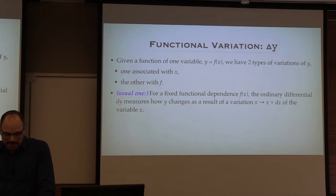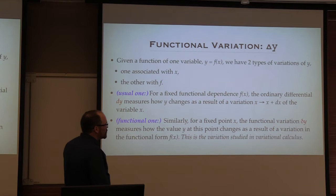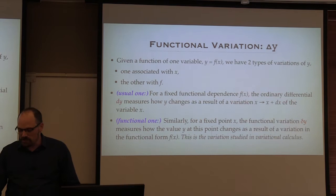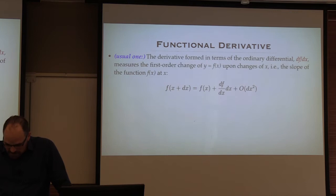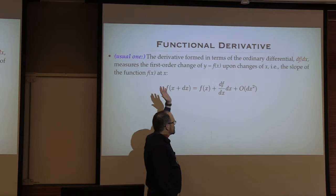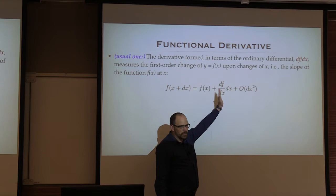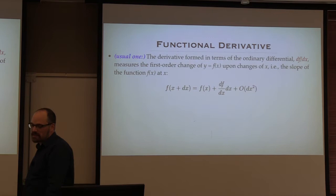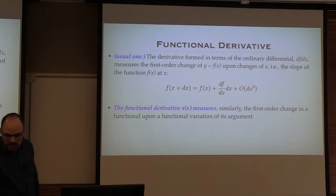Then there is the functional variation, where you actually change the function. The functional derivative is simply the variation of the functional at first order, dropping everything else. This is the change in the functional when I change the function — just as when you do finite differences numerically. It measures the change of a functional upon a change of the function.